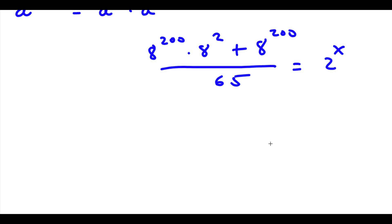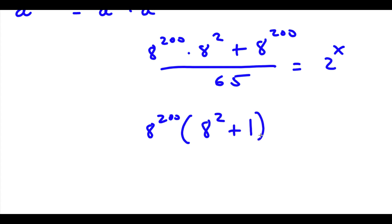From my numerator here I can go ahead and factor out 8 to the power of 200. So now I have 8 to the power of 200 times — 8 to the power of 200 times 8 to the power of 2 divided by 8 to the power of 200 is simply 8 to the power of 2, and 8 to the power of 200 divided by 8 to the power of 200 is 1. So 8 to the power of 2 plus 1, now I have this over 65 is equal to 2 to the power of x.